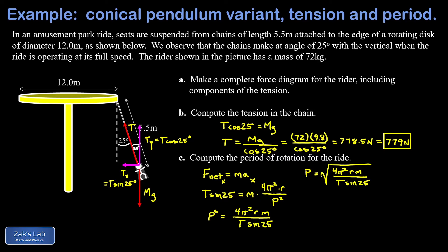r is the radius of curvature of the circular path of this rider, and that is not 6 meters. It's not the same as the radius of the disc. There's a little bit of extra distance here, which is given by the length of the chain, 5.5 meters, times the sine of 25 degrees. Our radius of curvature is the radius of the disc plus that extra 5.5 sine of 25.